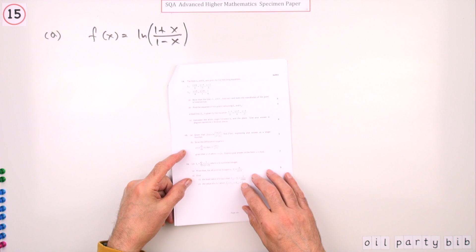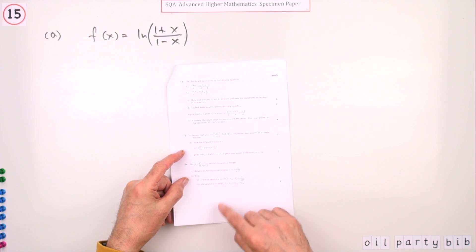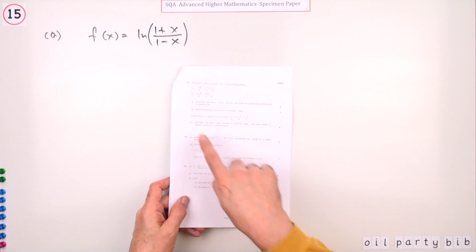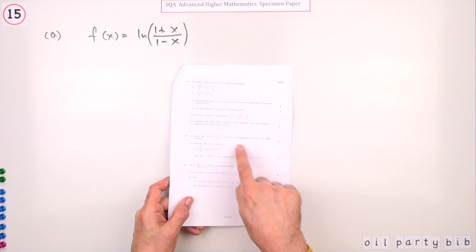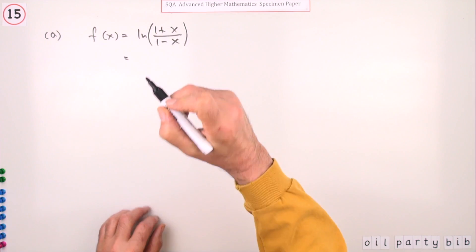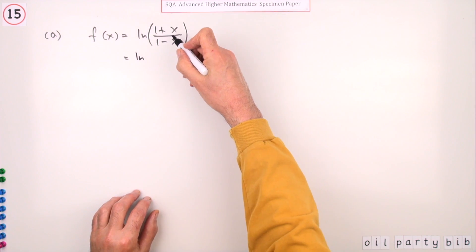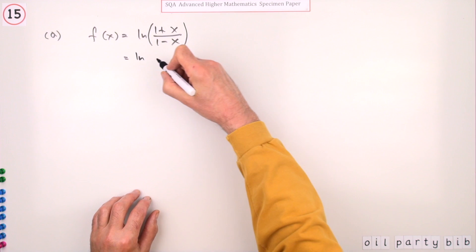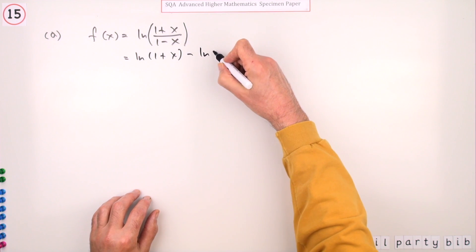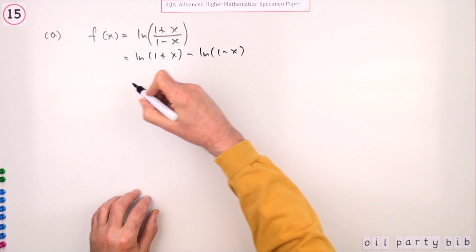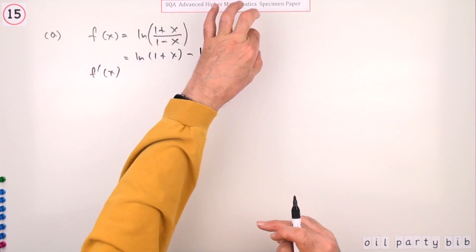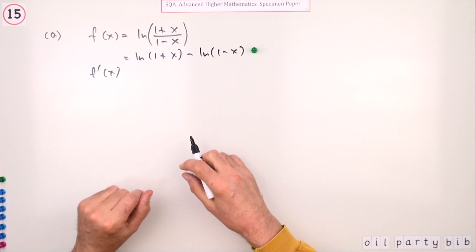Number 15 from this specimen paper, nine marks. Part (a) for two marks: given f(x), find f'(x) expressing your answer as a single fraction. Since it's a logarithm, use the log property to split it apart — ln(1+x) minus ln(1-x). Differentiating it by simply splitting it gives you the first mark.